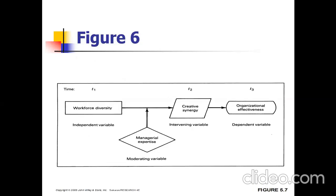This is an example combining both the intervening and moderating variables — the four variables discussed at the start of the chapter. Workforce diversity is the independent variable, managerial expertise is the moderating variable, and creative synergy is the intervening variable, all leading to organizational effectiveness as the dependent variable.